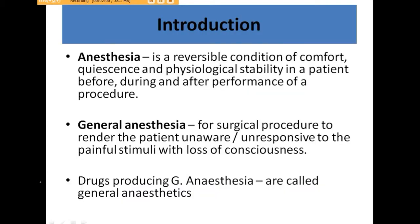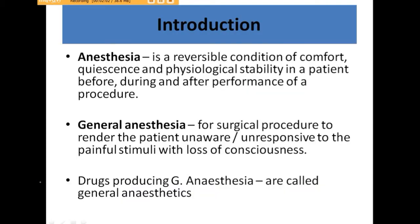Before the introduction of anesthetic agents, we should note certain terms. Anesthesia is a reversible condition of comfort, quiescence, and physiological stability in a patient before, during, and after performance of a procedure. General anesthesia is used for surgical procedures to render the patient unaware or unresponsive to painful stimuli with loss of consciousness. Drugs producing general anesthesia are called general anesthetics.